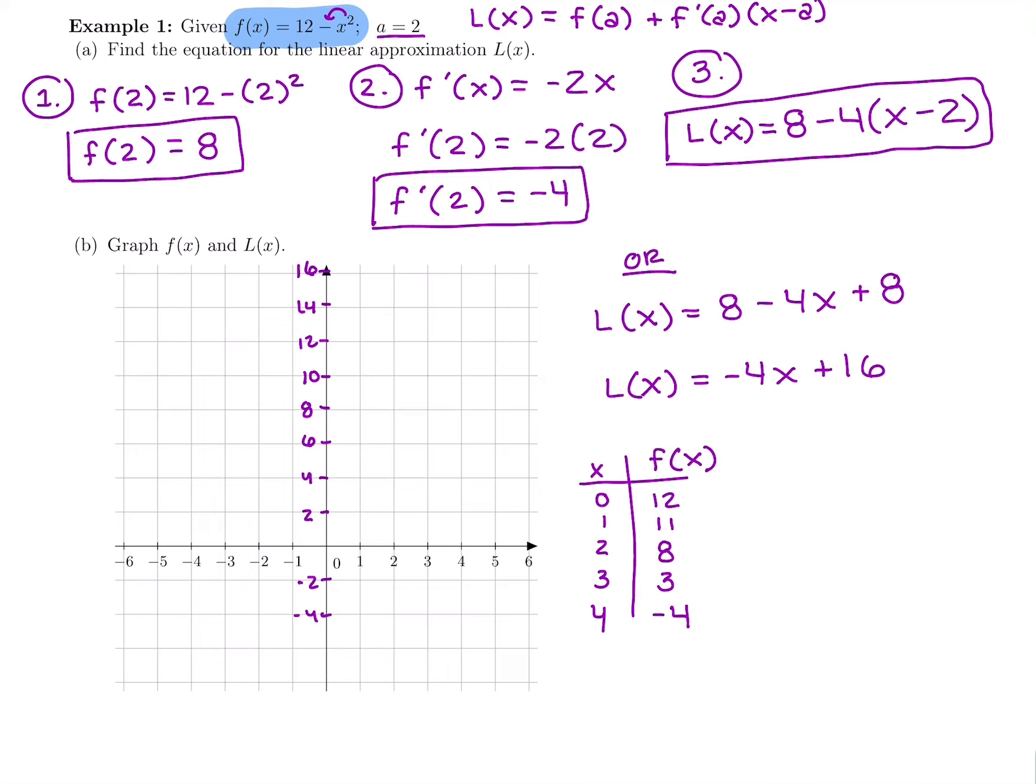Alright, so plotting our parabola. 12 minus x squared starts at 0, 12, then 1, 11, then 2, 8, then 3, 3, and 4, negative 4. Here's our upside down parabola. Since it is a parabola, we could reflect it across the axis of symmetry there. But we're just approximating near a equals 2, so we don't have to draw the other half necessarily.